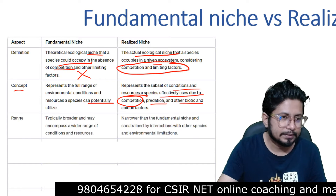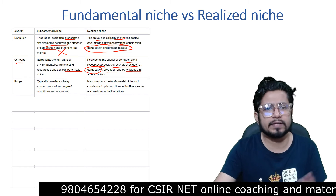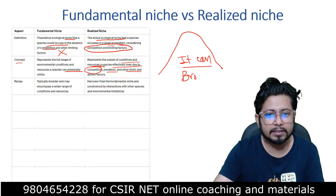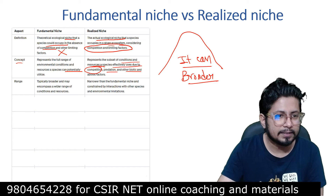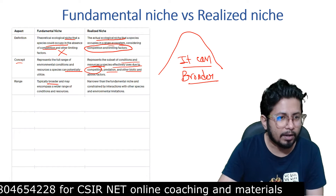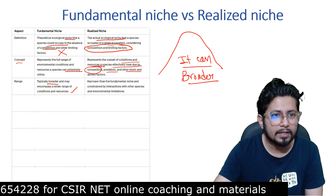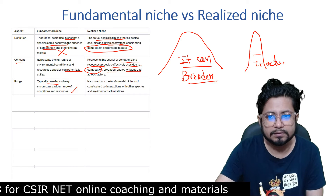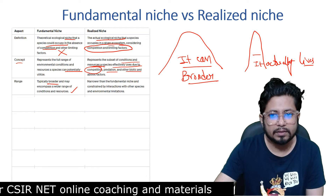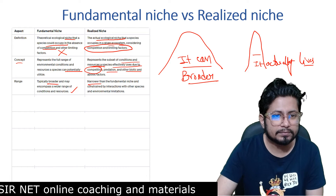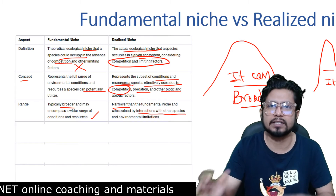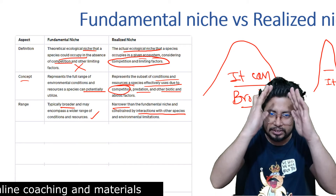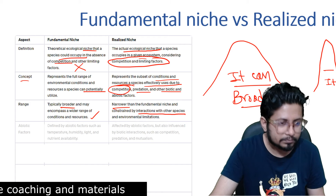In terms of range, fundamental niche is broader and may encompass a wider range of conditions or resources. Realized niche is narrower — it reflects where the organism actually lives — constricted by interactions with other species. Due to niche overlap with other species, the range becomes narrowed.